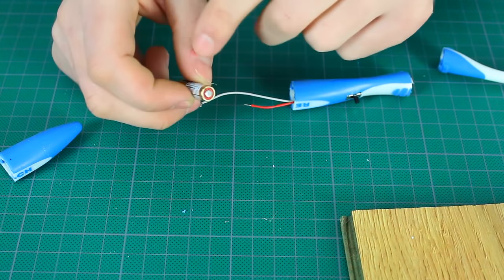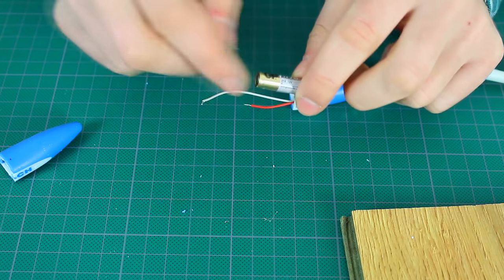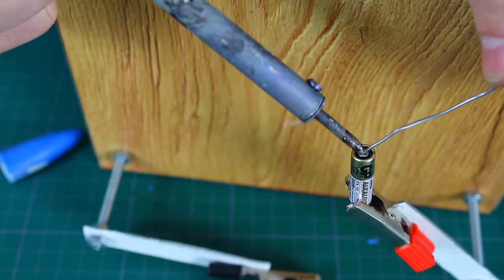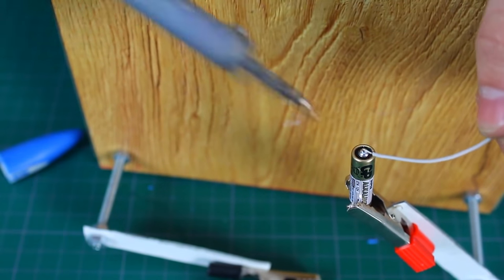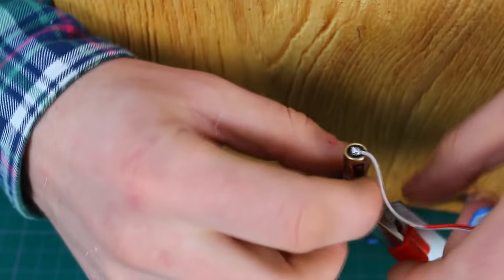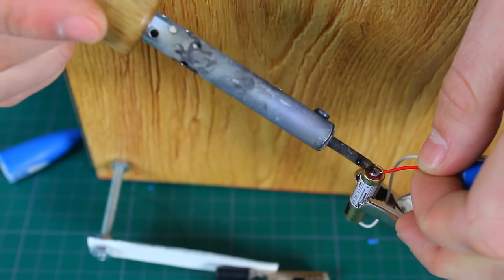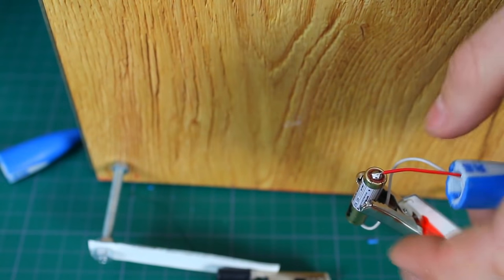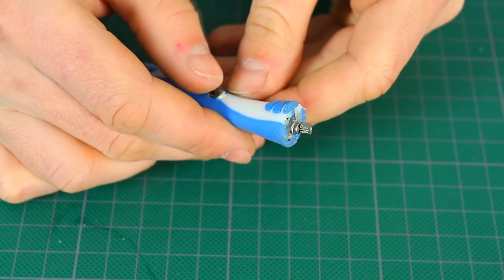Now, we need to solder these two wires to the battery. Red wire goes to the plus and the white one to the minus. After soldering the wires, check if everything works well.